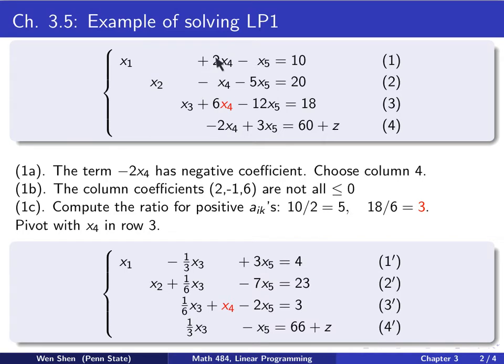And then you need to pick one of the positive ones to pivot. So now you go to 1c. You will be computing the ratio of those two positive coefficients. So I have 10 over 2, which is 5, and the second one is 18 over 6, which is 3. And then I shall find the minimum of these two, which is 3. So you now conclude that I will perform pivoting process with this x4 in the row 3 here. So combining the finding in 1a and 1c, you chose the pivoting point.